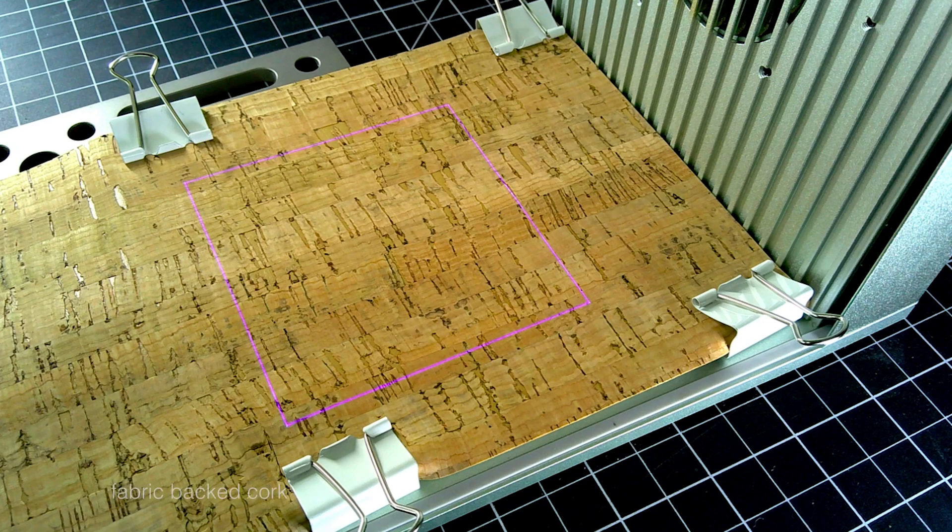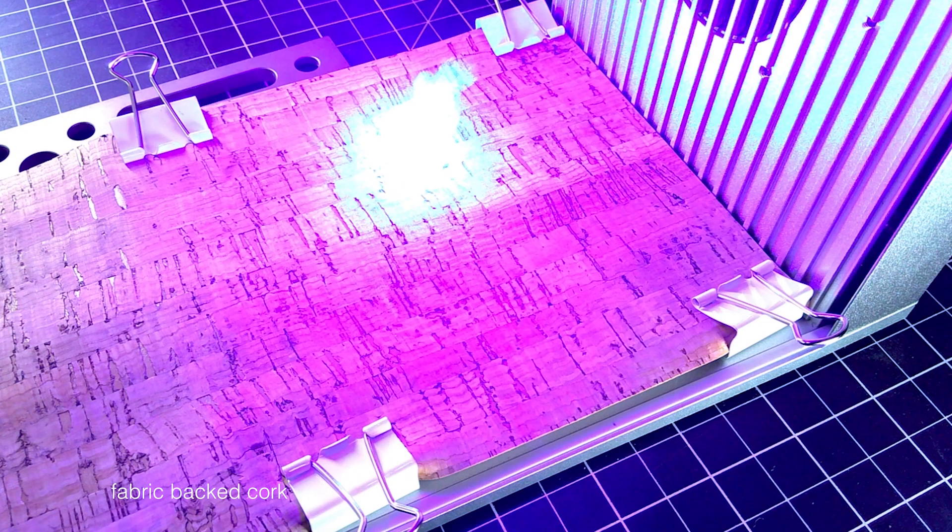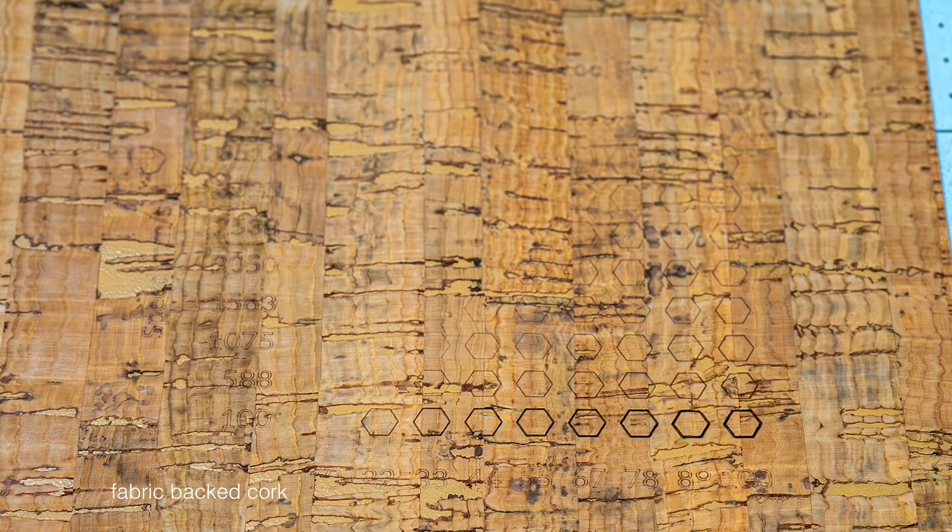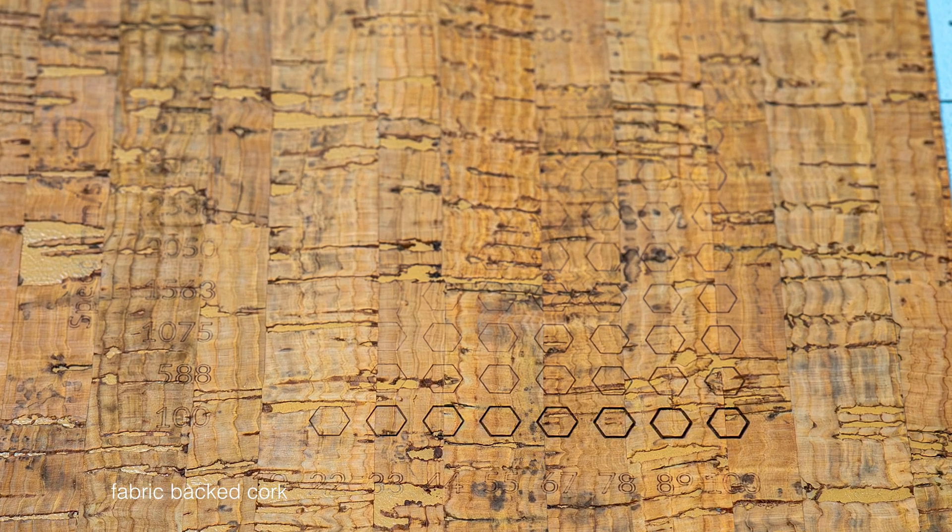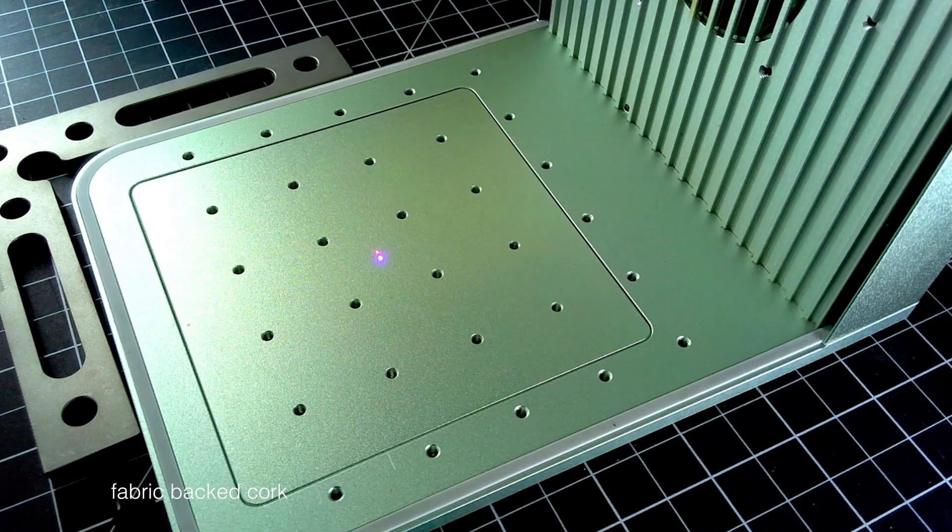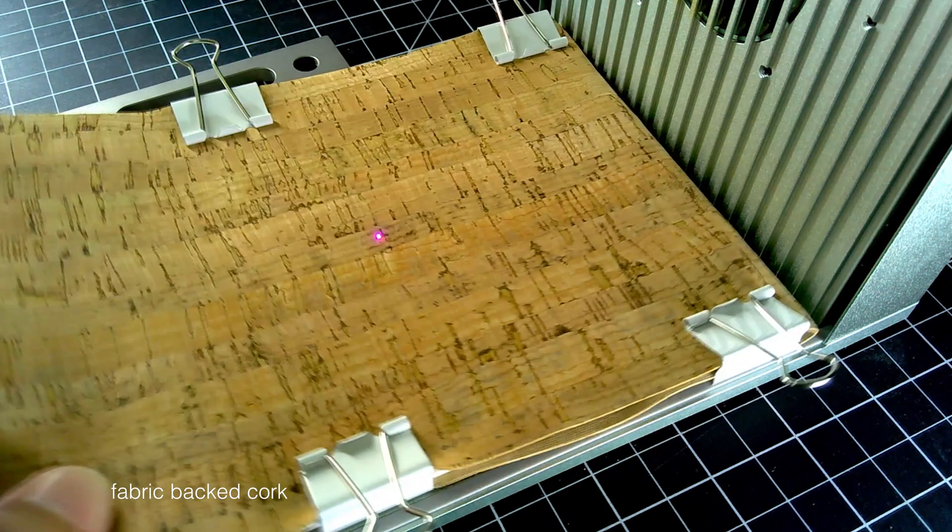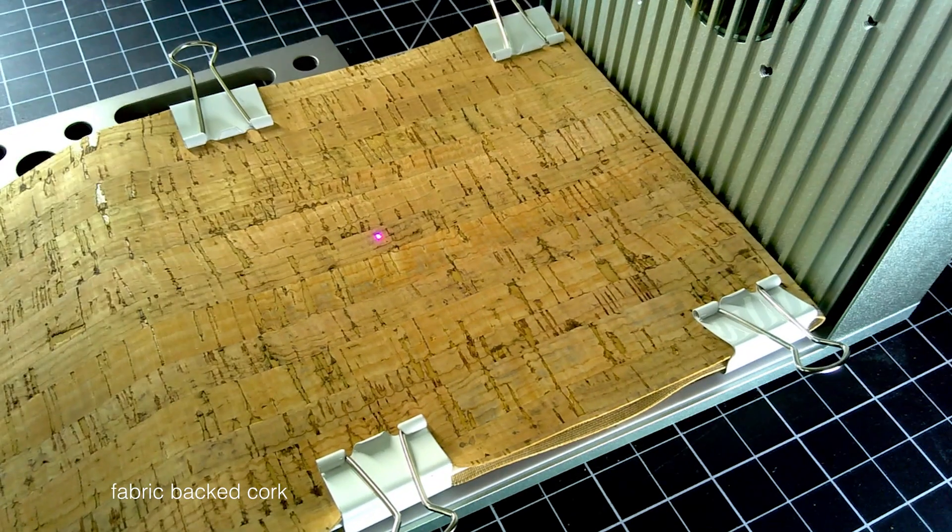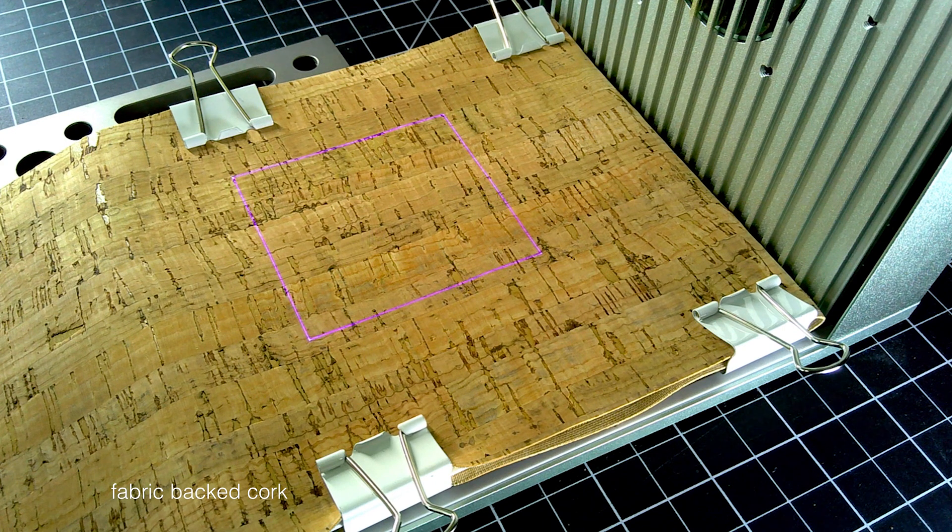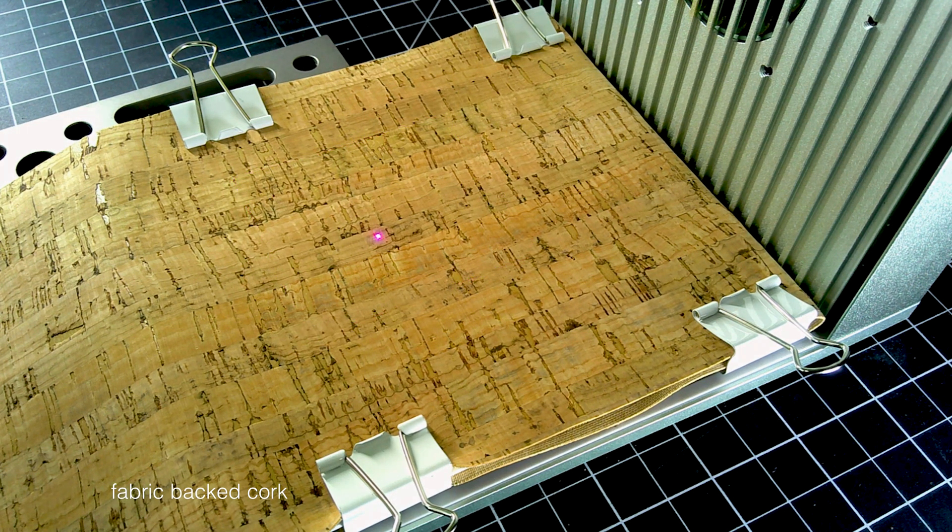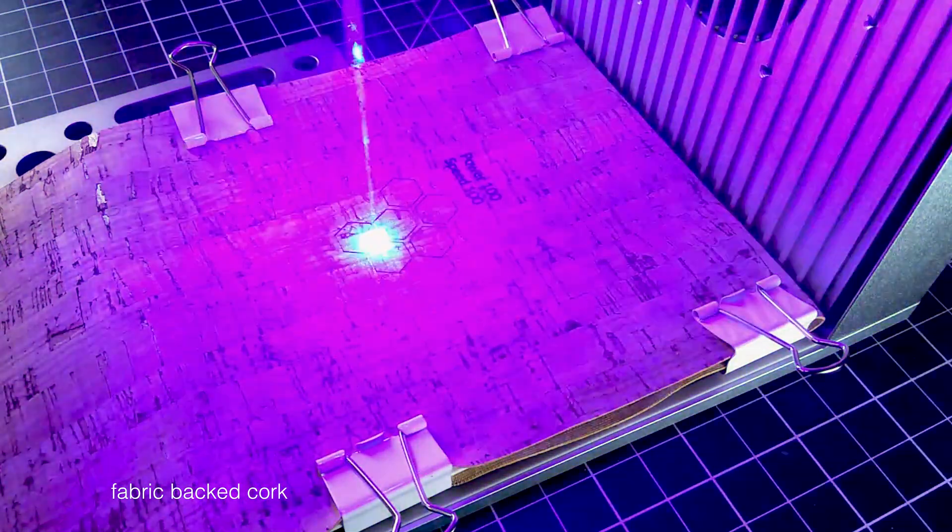Out of this set, the fabric-backed cork seemed to respond best to the laser. The lines stayed sharp even with multiple passes at full power and the cork resisted scorching. Since a lot of cork-based materials that are available are a combination of cork and another substrate, it's important to remember that those two materials will have their own properties and will likely respond differently when the laser makes contact with them.